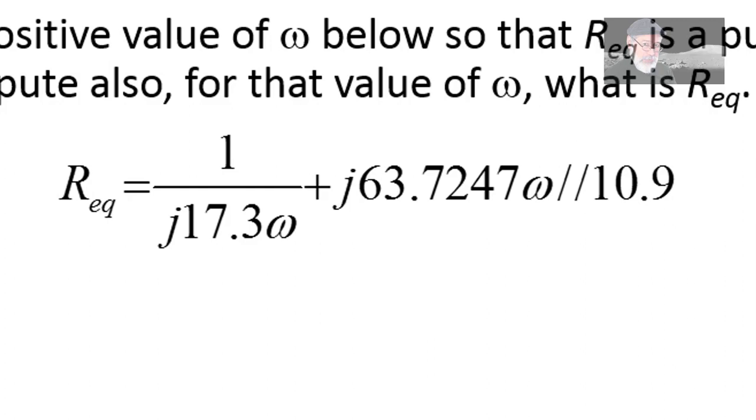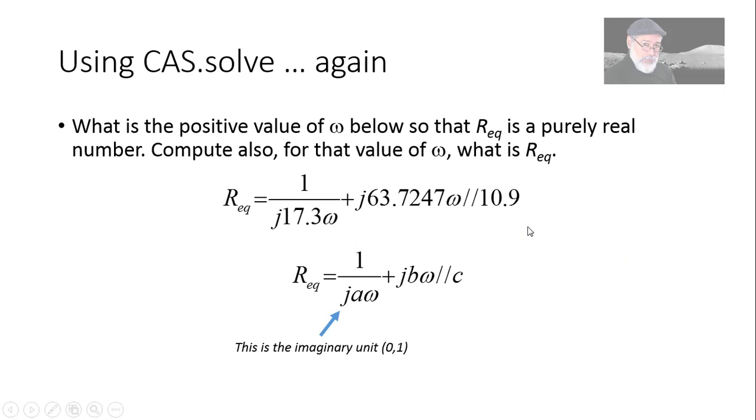So that is the equation. And that symbol on the far right, the two parallel lines, means the parallel of whatever is on the left to whatever is on the right. Multiply them, divide by the sum. If we use symbols, letters a, b, c, instead of numbers, the expression looks like that. Again, j is the imaginary unit, 0,1 in rectangular mode. And those two lines represent the parallel of the two values on both sides.